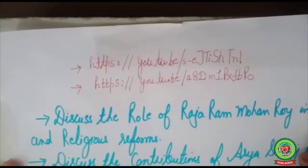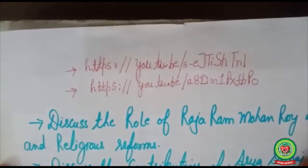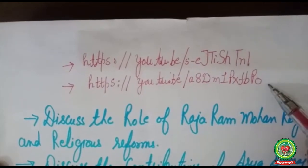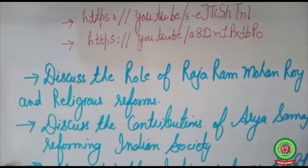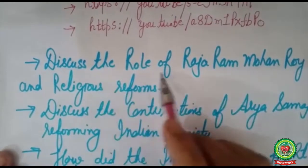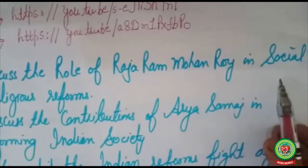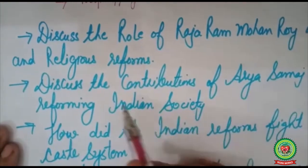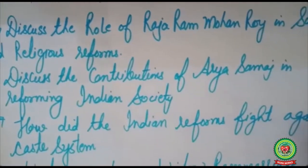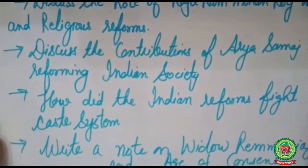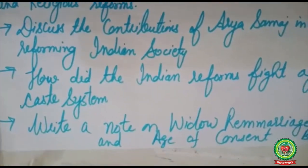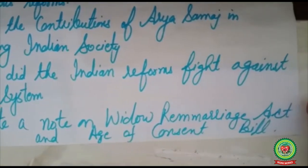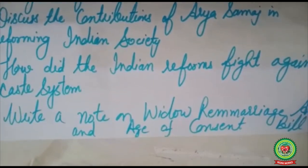This was the end of the lesson. I would advise you to go through the provided links for further information. Discuss these questions: the role of Raja Ram Mohan Roy in social and religious reforms, the contribution of Arya Samaj in reforming Indian society, how Indian reformers fought against the caste system, and write a note on the Widow Remarriage Act and the Age of Consent Bill.